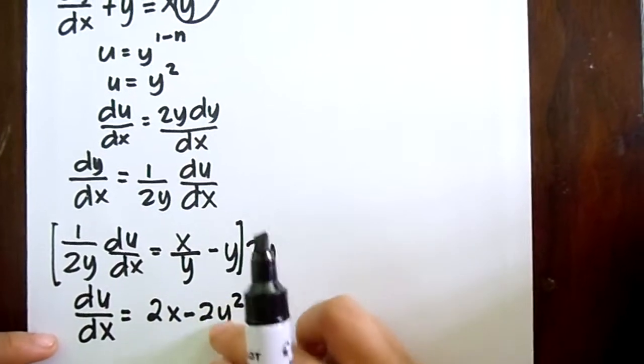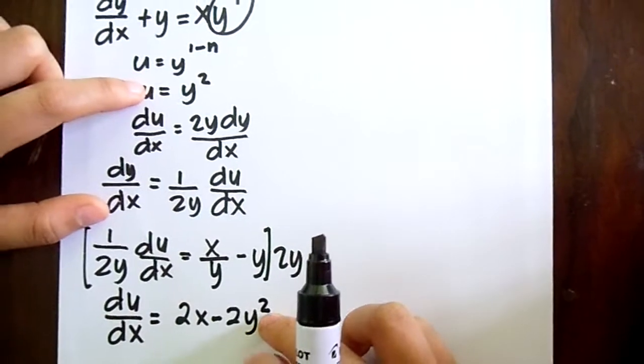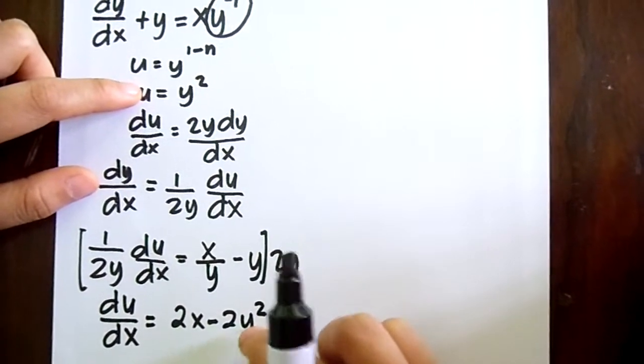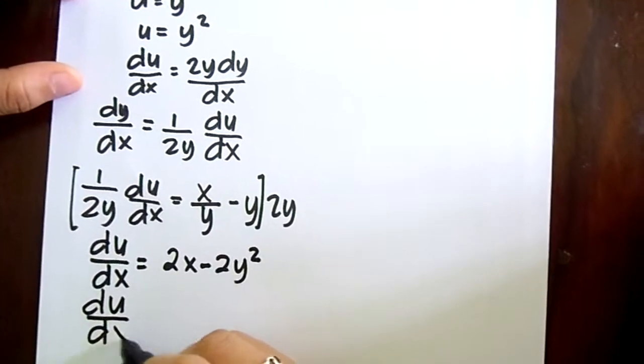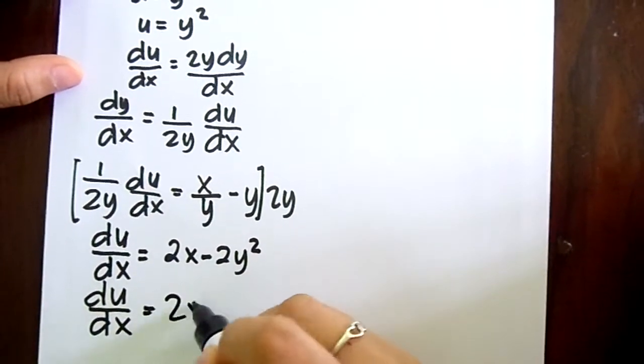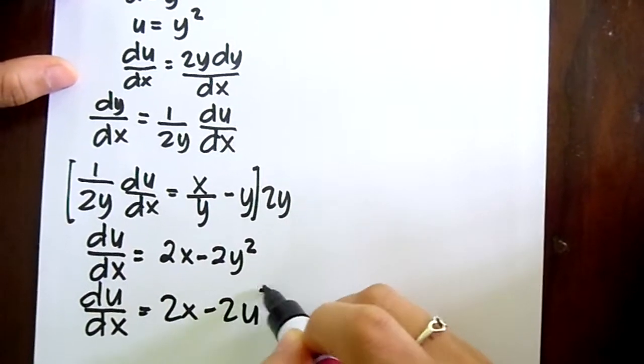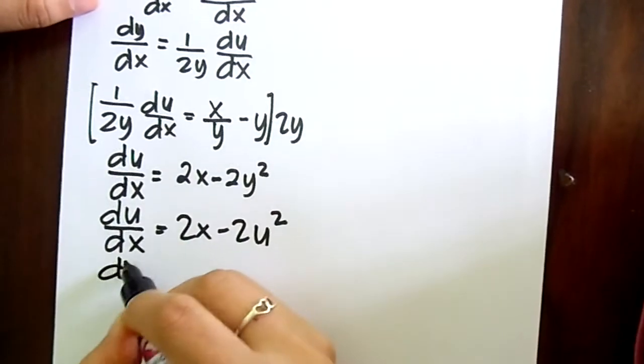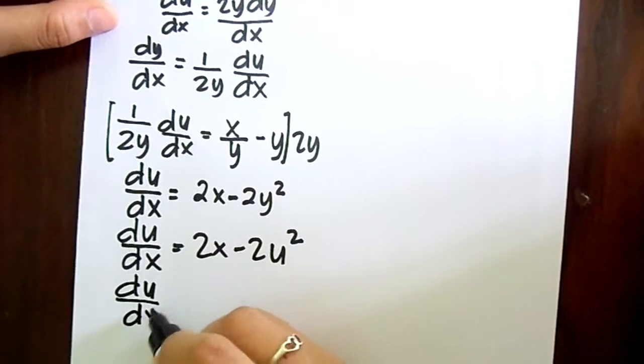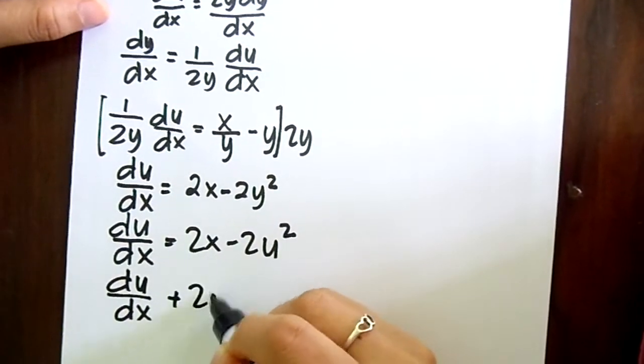So remember that our u here is y squared, so we just substitute this y squared to u. So it becomes du over dx equals 2x minus 2y squared. Transforming it, we get the general equation is du over dx plus 2u.